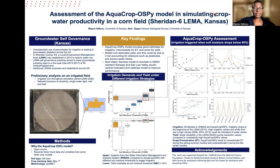Areas that have fewer or limited surface water options have developed self-governance practices that aim to lower water use. In Sheridan County, a local enhanced management area was established in 2013 to reduce water use by lowering groundwater pumping rates to a five-year total of 55 inches per irrigated acre — an overall 20 percent decrease in groundwater pumping rates.